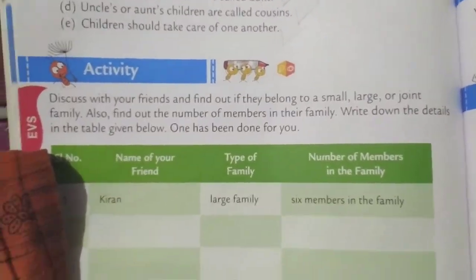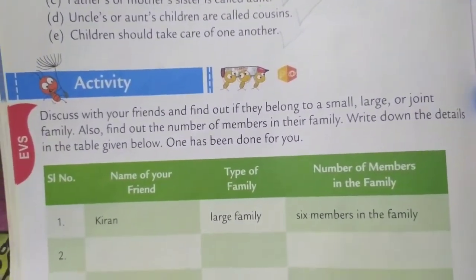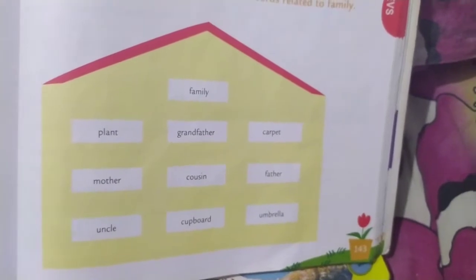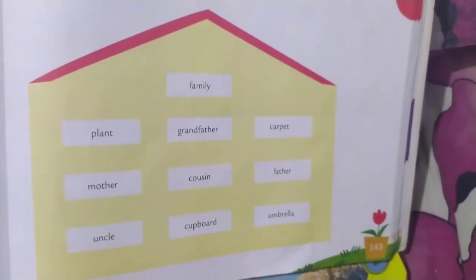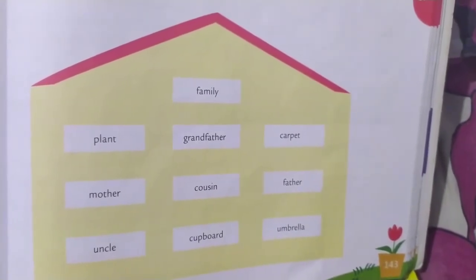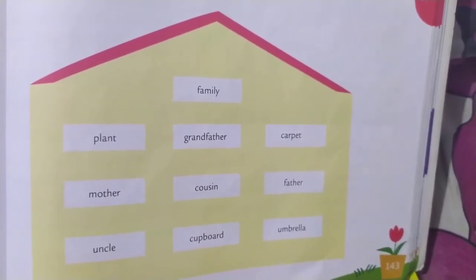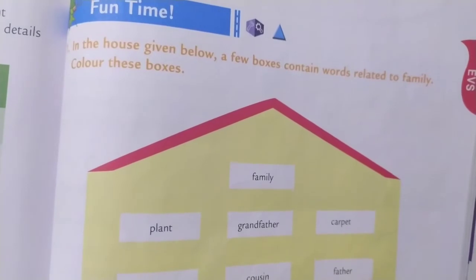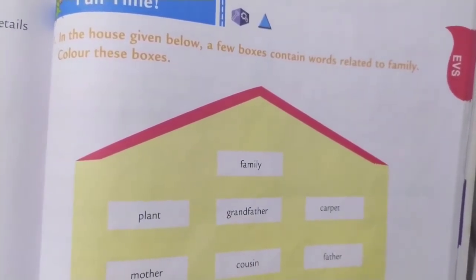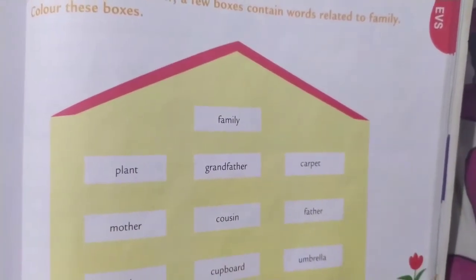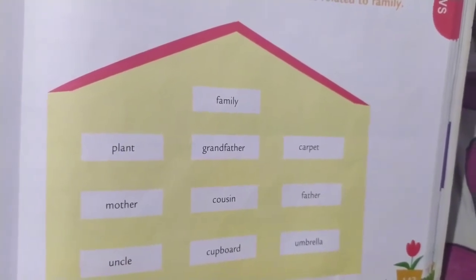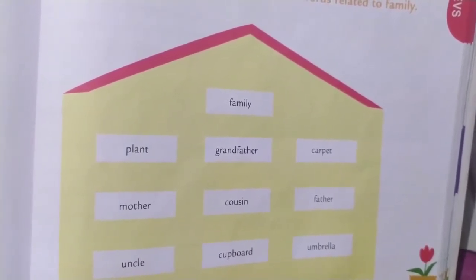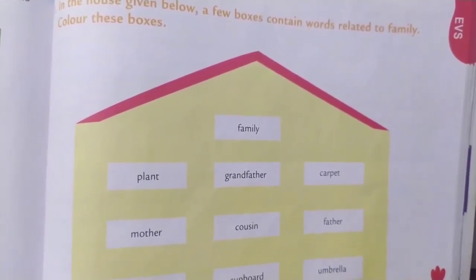Some other activities are also there in your textbook — just go through that. There is an interesting work for you. Look at this house — a small house you can see, and a lot of words are there. Read these words: family, plan, grandfather, carpet, mother, cousin, father, uncle, cupboard, umbrella, etc. You should find out the words which are related to our family and color those boxes which are connected with your family members. Others you don't need to color.